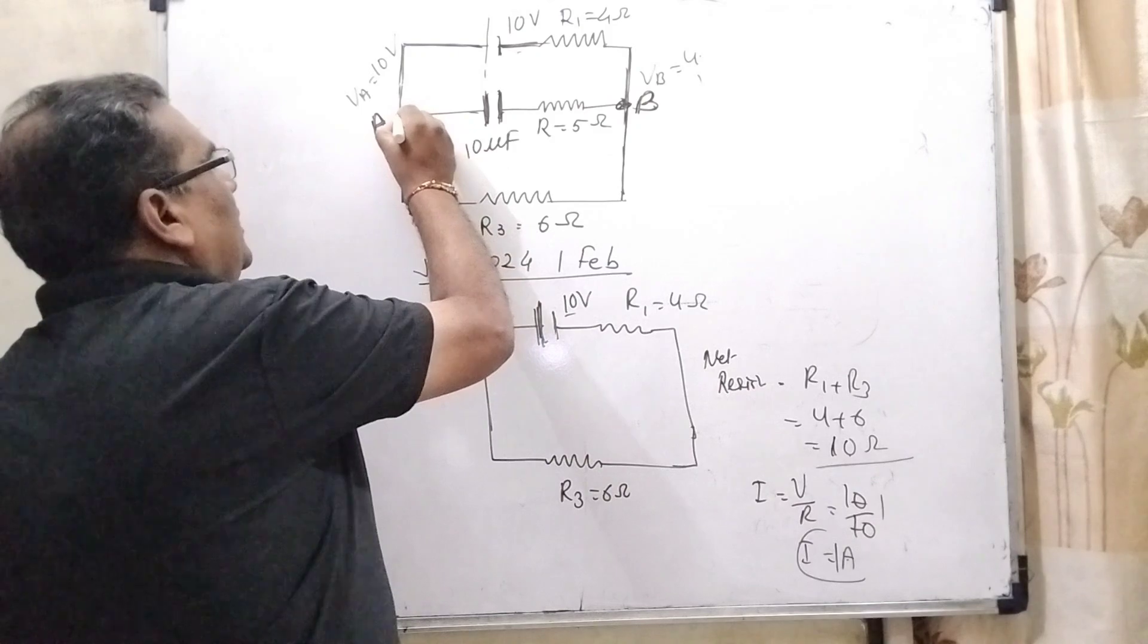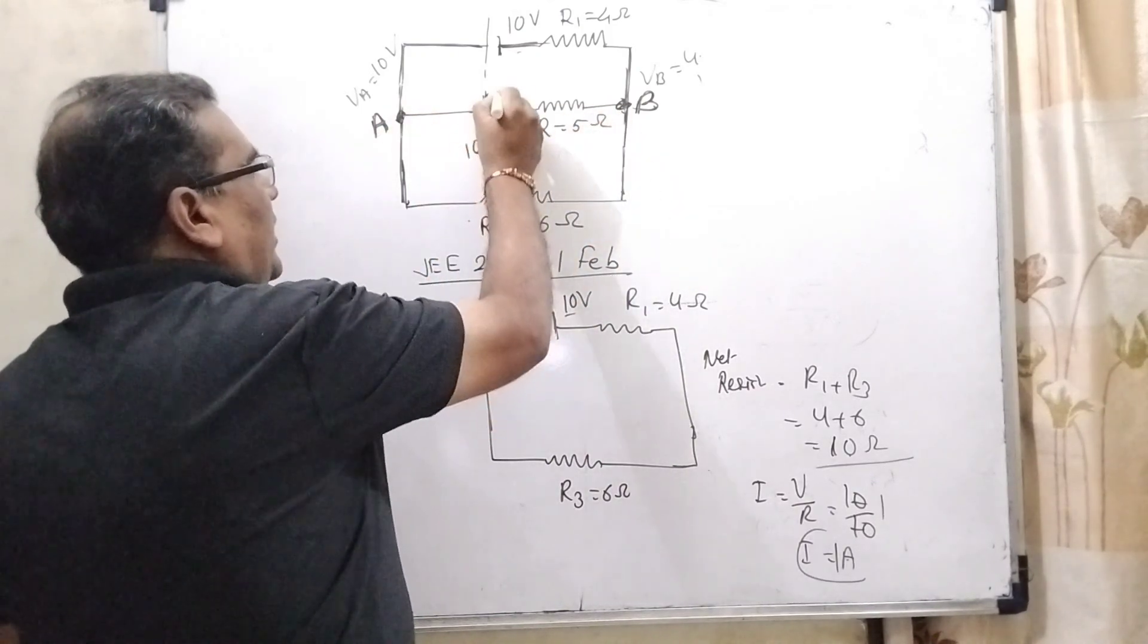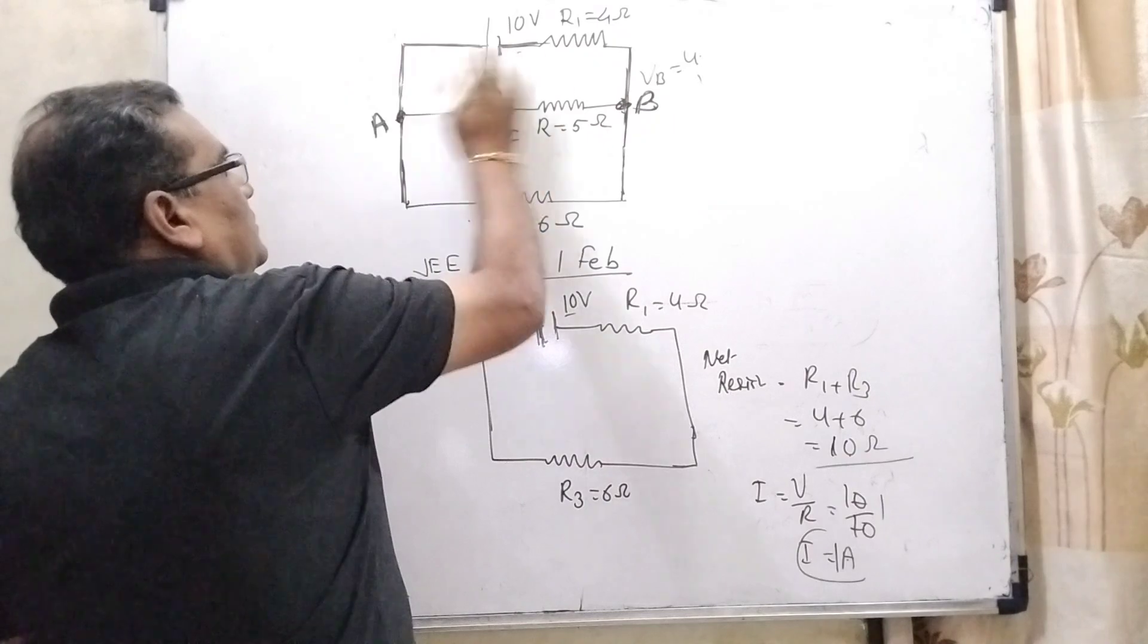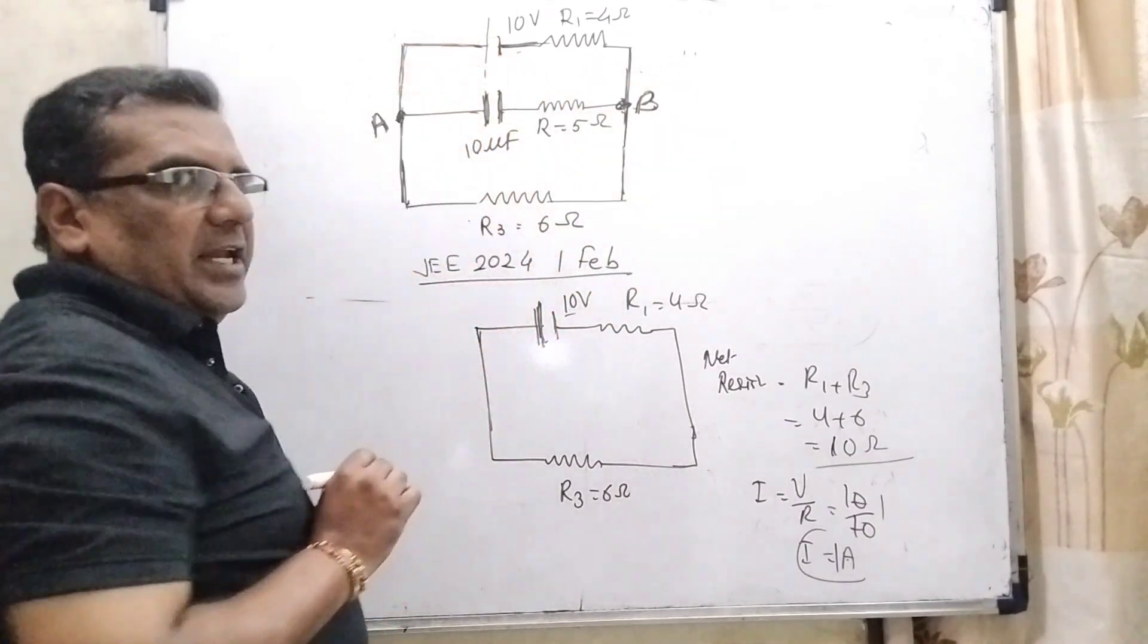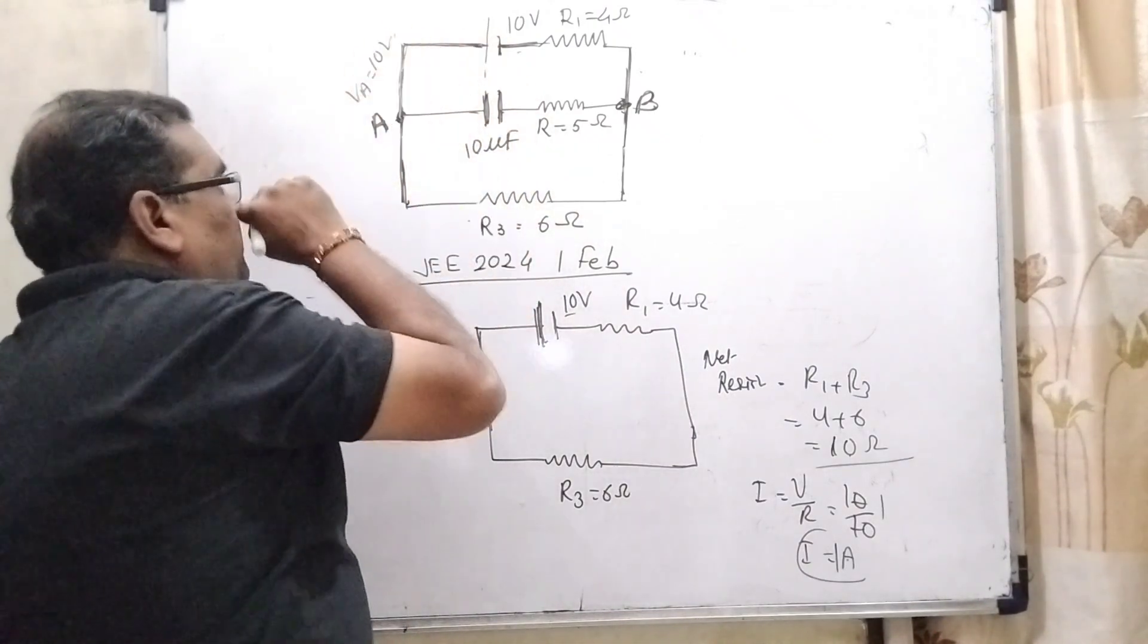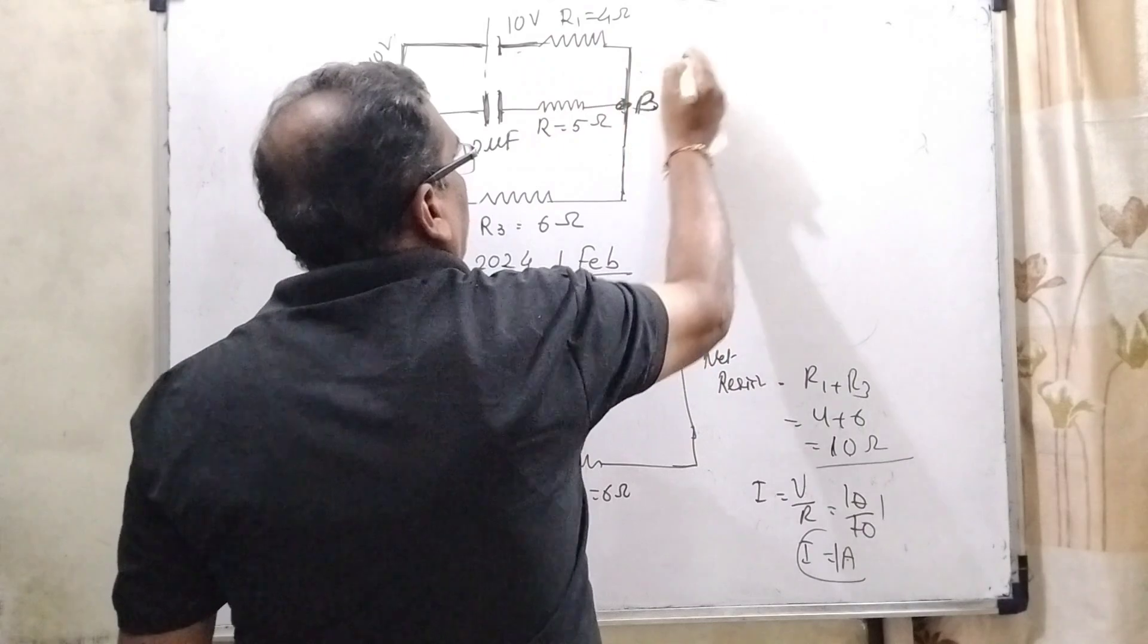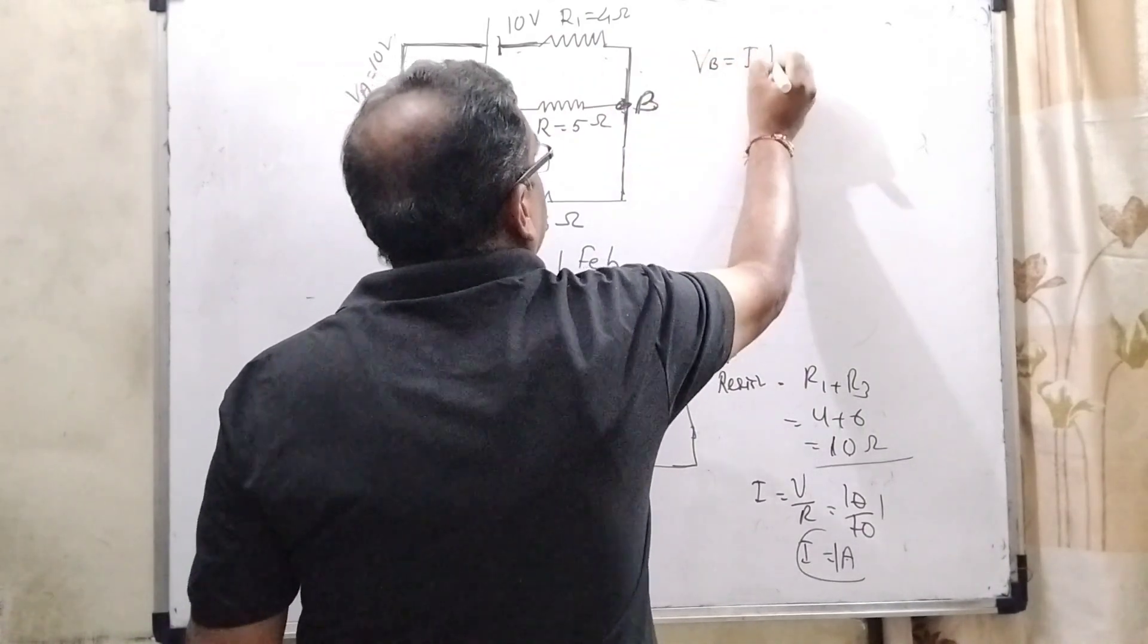Now let us see here when capacitor is connected to the AB terminals, here 10 microfarad that is capacitance and 5 ohm resistance. So here at the end A, there is no amount of resistance is connected. So directly this end potential is 10 volt. And at the end B, VB, so here resistance is connected 5 ohm.